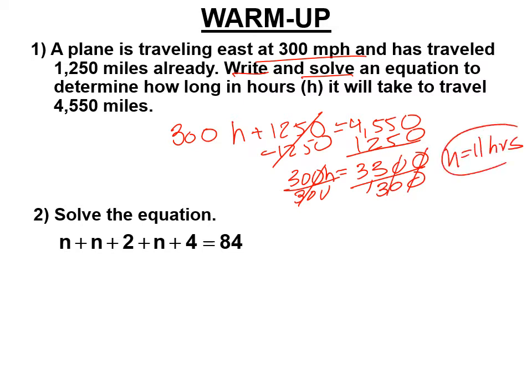This is a word problem — put a word on your answer. And then from the last lesson, combining like terms: n plus n plus n. We're going to be using n instead of x today. So that's three n's, plus 2 plus 4 is 6. We've combined our like terms, so it's a two-step equation.